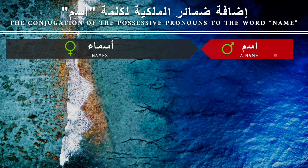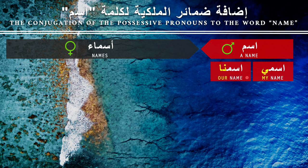Here we have 'my name' first — 'ismi.' The letter ya at the end of the word means 'my.' So 'my name' is 'ismi' — we add the possessive pronoun at the end of the word. 'Ismuna' means 'our name.' Then 'ismuk' means 'your name' — if 'you' is one person. If 'you' is more than one person, it becomes 'ismukum' — your name for a group of people.